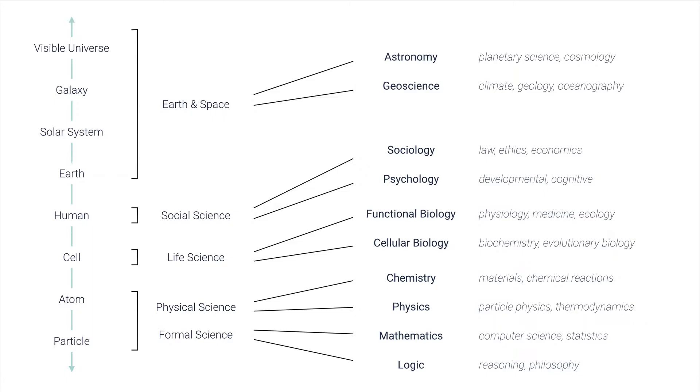This is a lot of information, so let's look at this from left to right. On the left side at the very top, we have the visible universe. As we go down in that spectrum, we get into smaller and smaller sizes: galaxy, solar system, Earth, human, cell, atom, particle. We're zooming in.